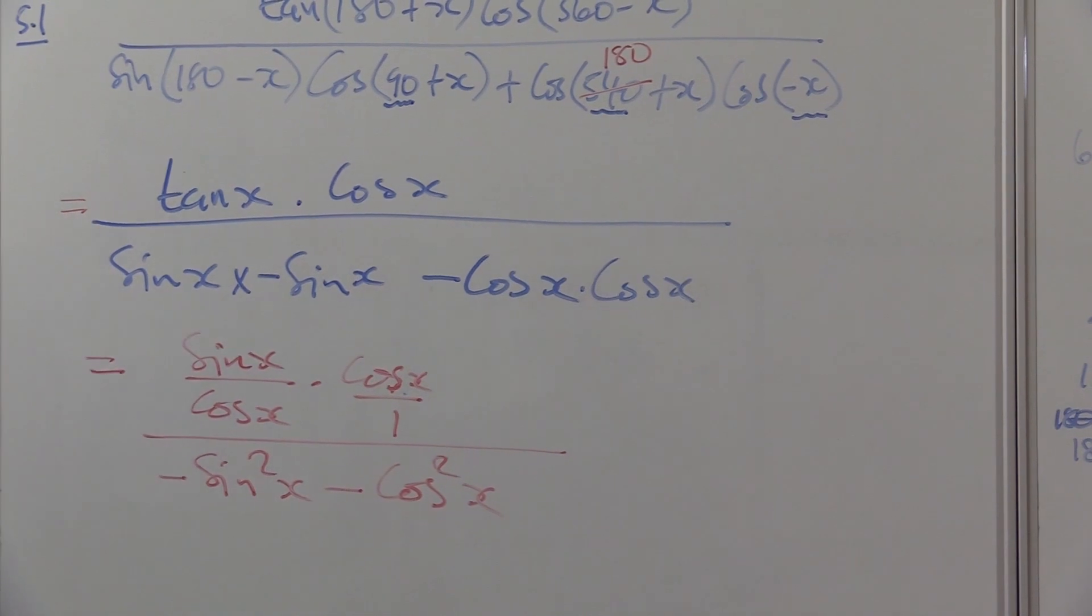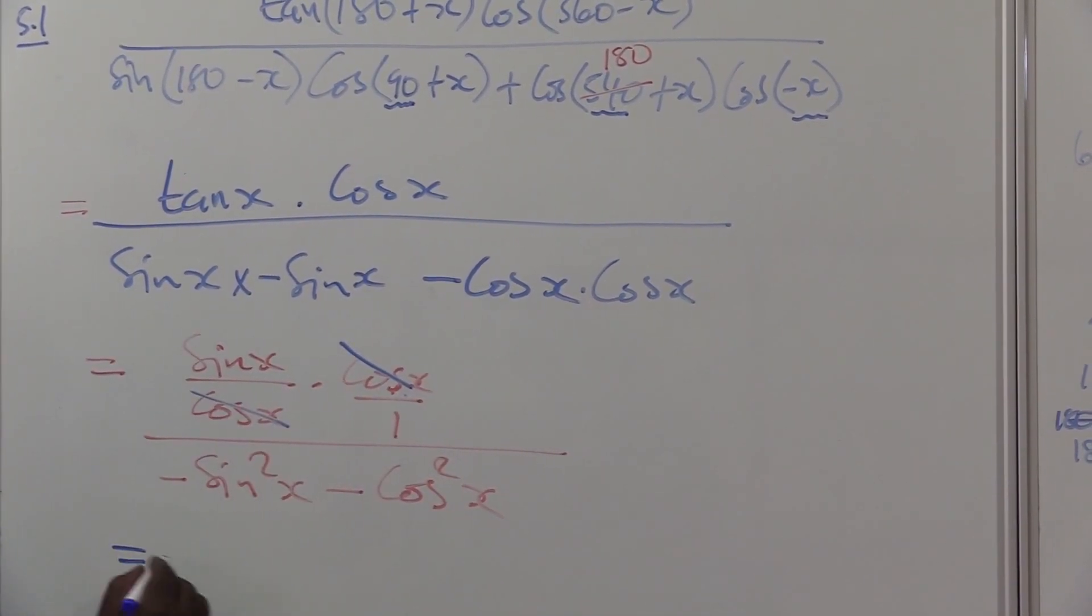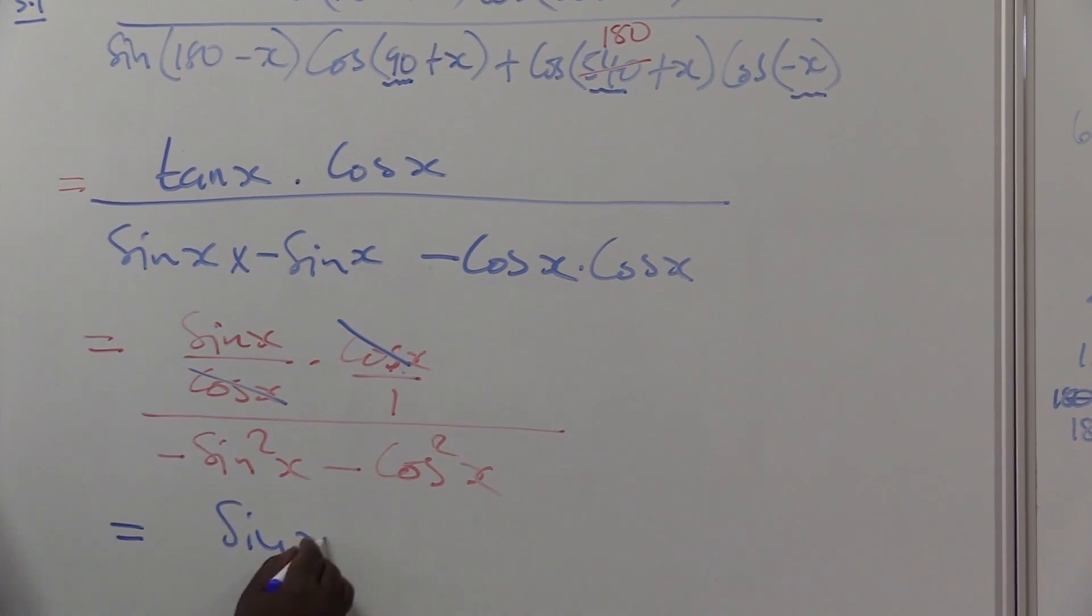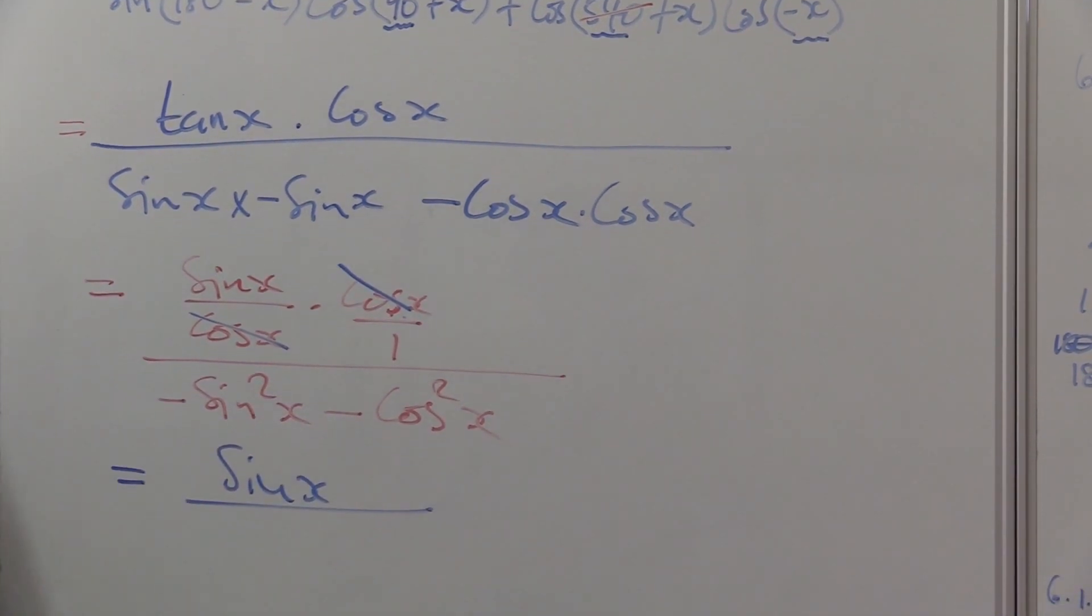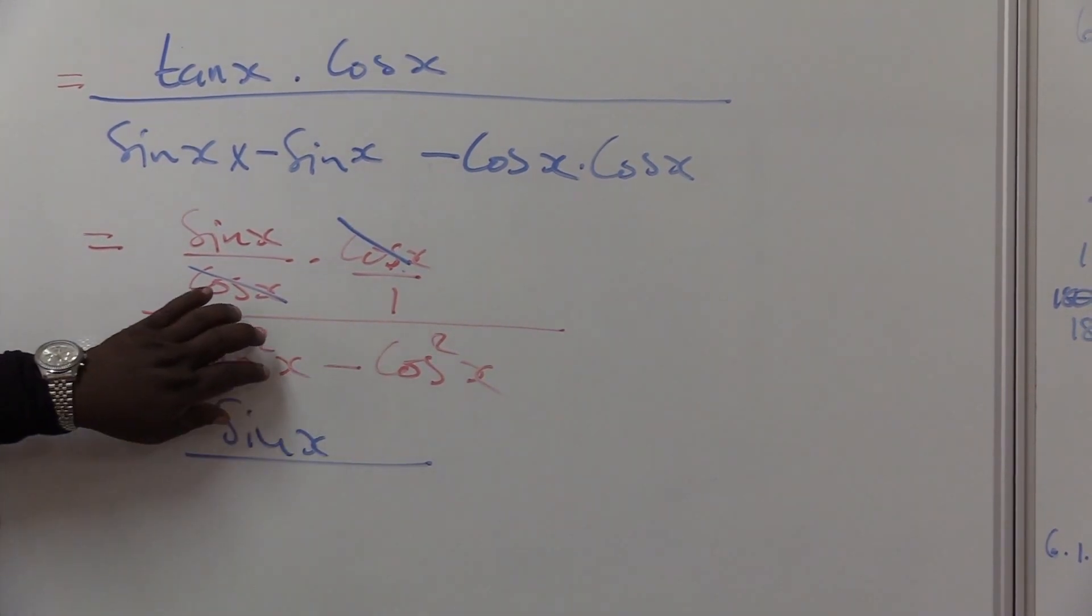Remember, cos x goes once. We are left with sin x on my numerator. Let's look at what we have here. We've got two terms, this one and that one. What do you notice? A common factor.